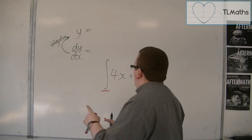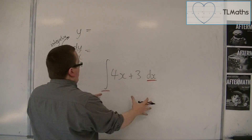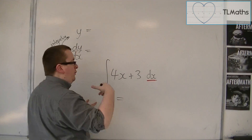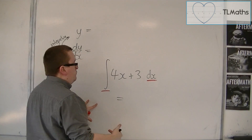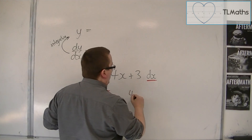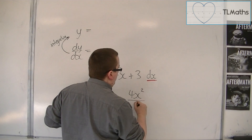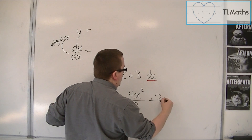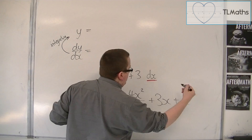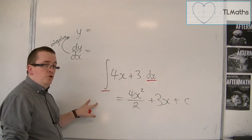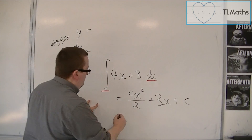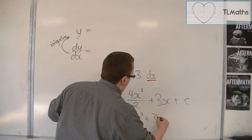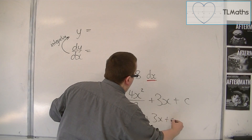If that was the question, then it goes through exactly the same process: you add 1 to the power, divide by the new power. The 3 goes to 3x, and we have our constant of integration. So this would be 2x squared plus 3x plus c.